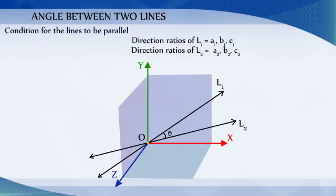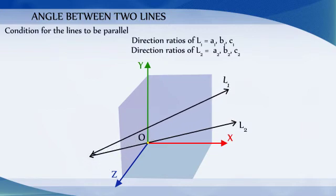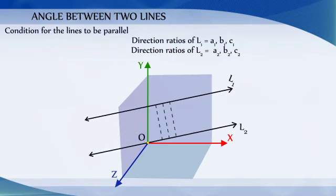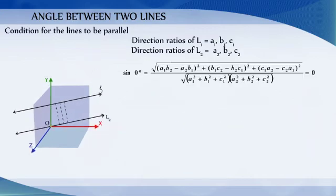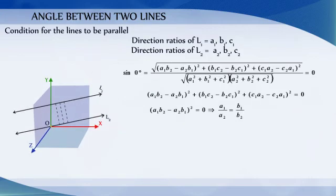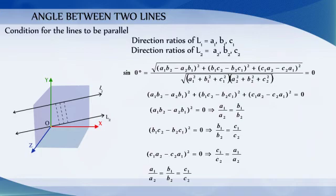Condition for two lines to be parallel. If two lines are parallel, then the angle between them is 0. Substituting theta equals 0 in the formula for sin theta, we get the condition for two lines to be parallel as A1 over A2 equals B1 over B2 equals C1 over C2.